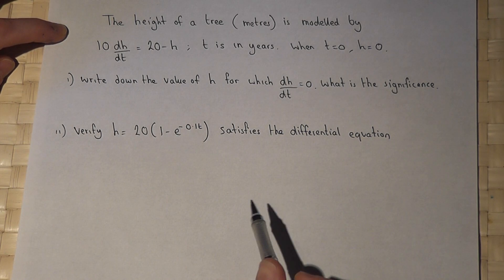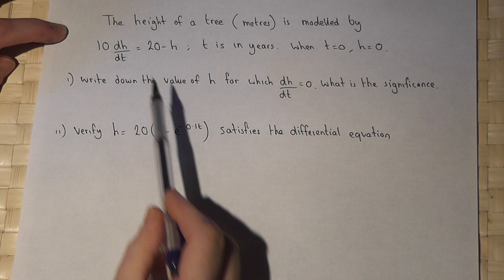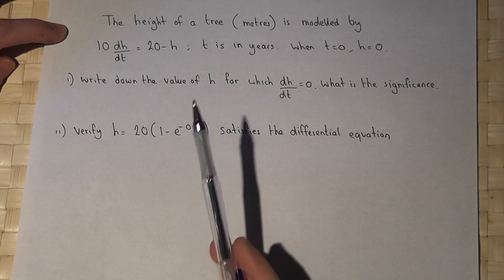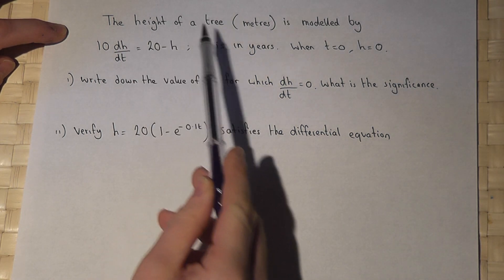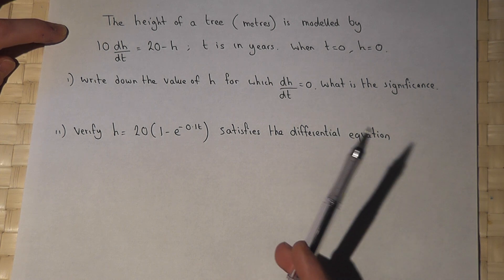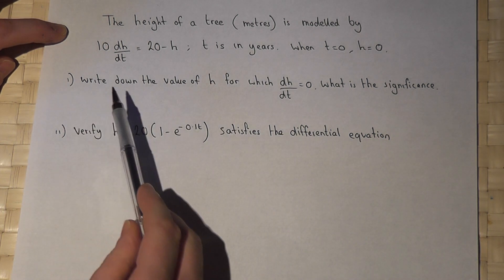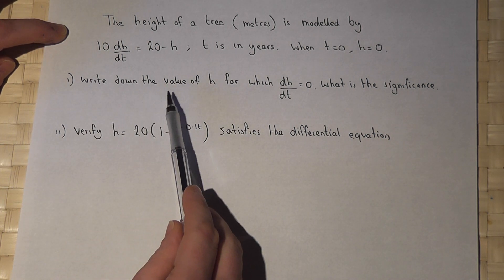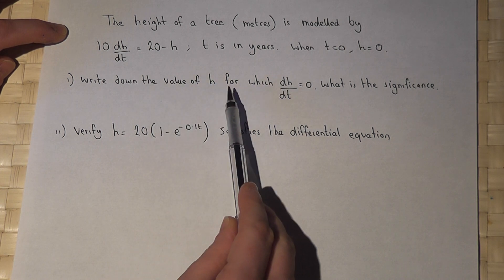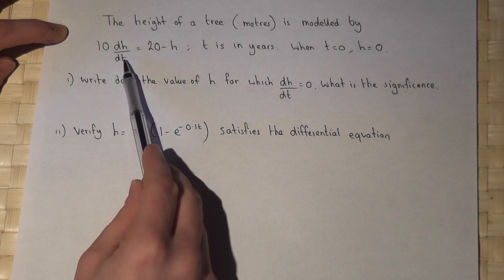In this question we're given a differential equation which satisfies the growth of the tree in meters. In part one we're asked to write down the value of h for which dh by dt equals zero.